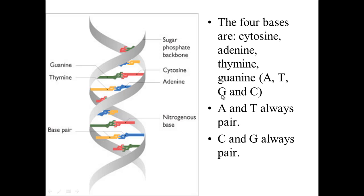The bases always pair together in a very specific way. Adenine always binds to thymine, and cytosine always binds to guanine, regardless. You can see that represented here with these different colored bases — for instance, the guanine is in green and the cytosine is in red, and those two always bind together. The thymine in yellow and the adenine in blue always bind together.